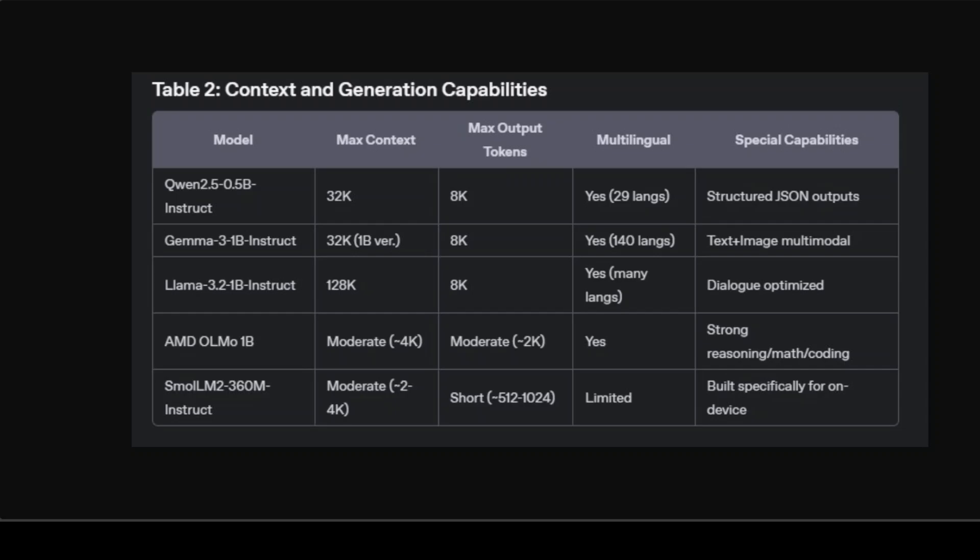Looking at generation capabilities and context information: Llama offers the largest context size of around 128K, which is quite useful when dealing with extensive conversations or long documents. Gemma excels in multimodal image and text understanding with extensive multilingual coverage, useful for creative and visual applications. Alibaba's Qwen stands out with structured JSON output capabilities, ideal for practical integrations where data is structured. AMD OLMo specifically emphasizes logic, math, and coding. SmallLM2 is geared towards efficient on-device usage such as tablets or mobile devices.